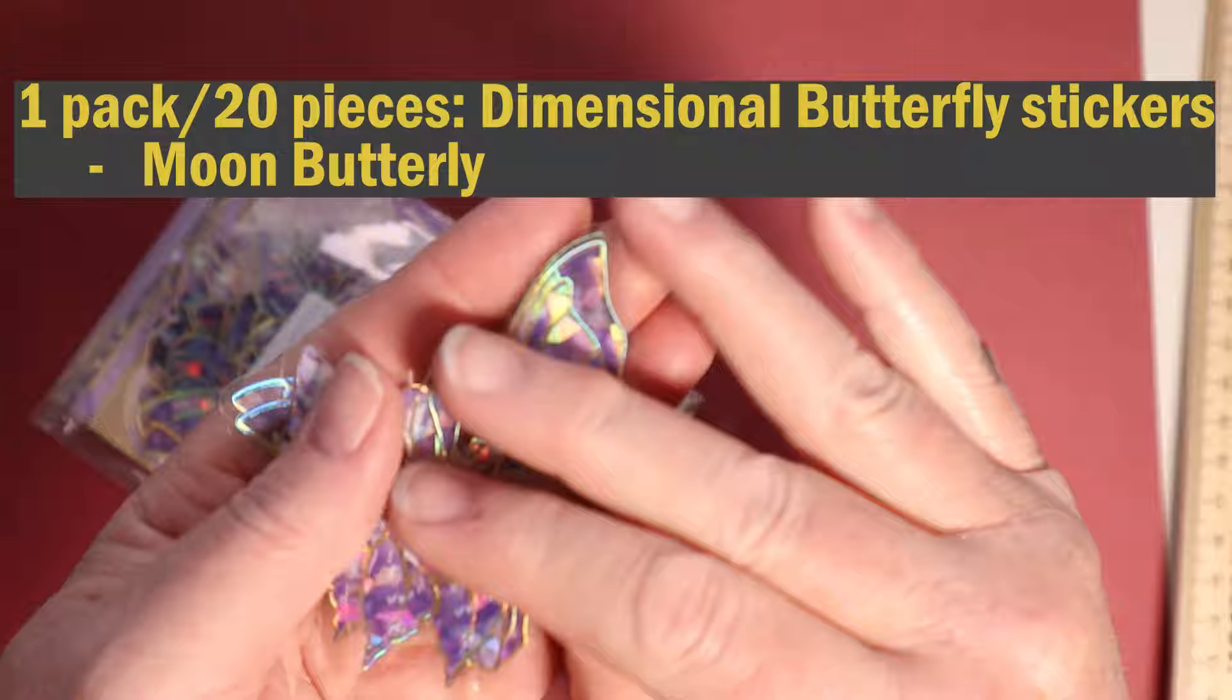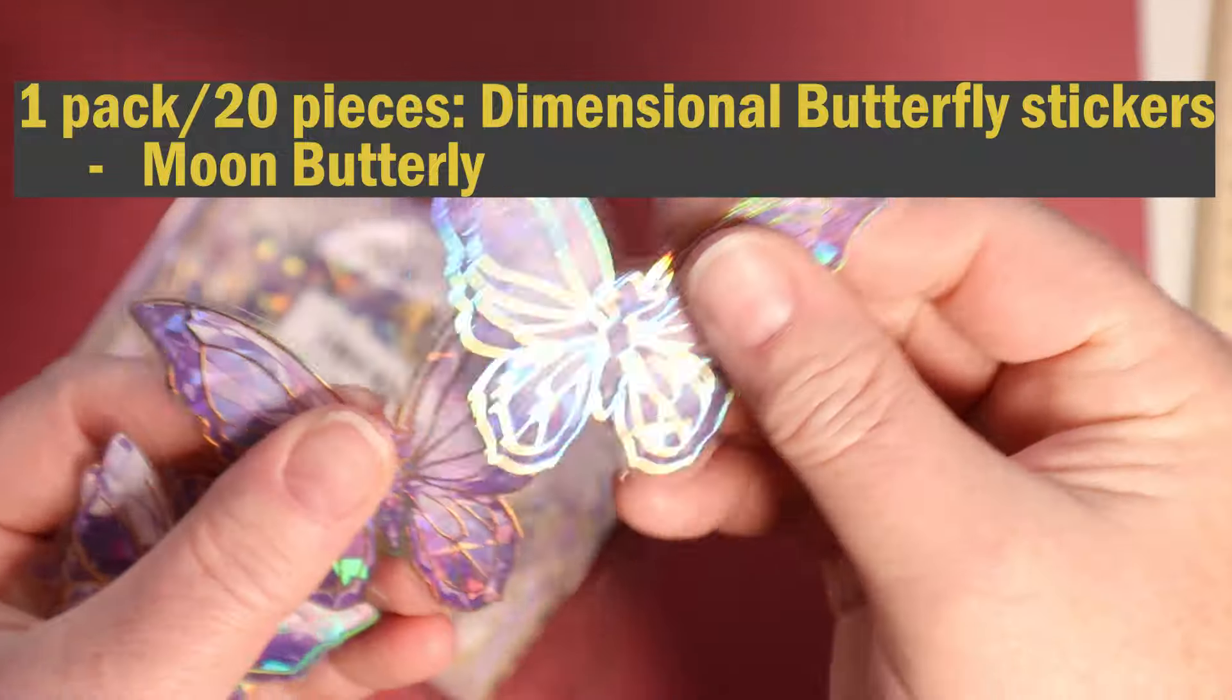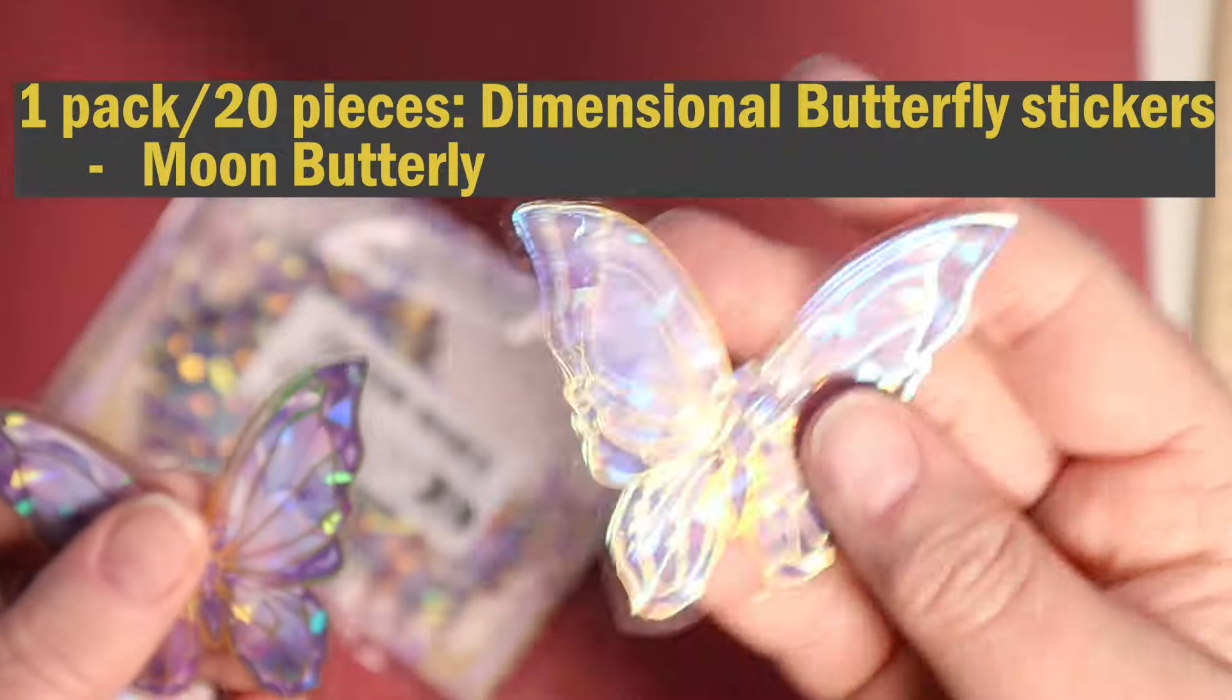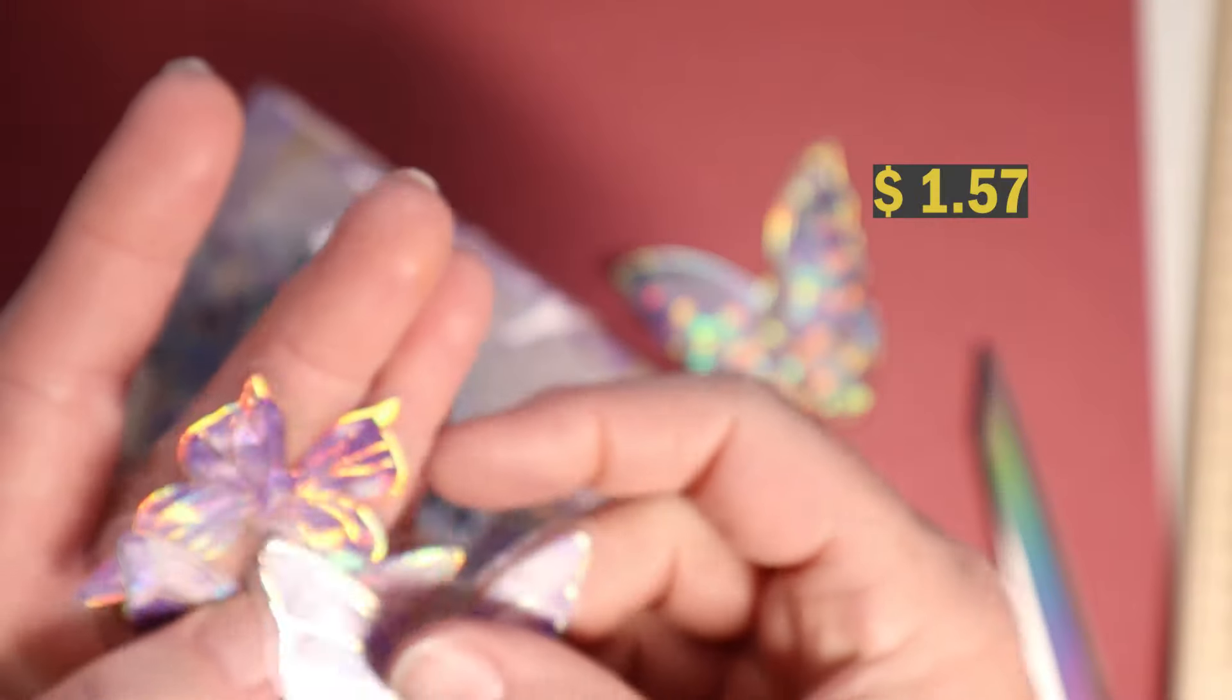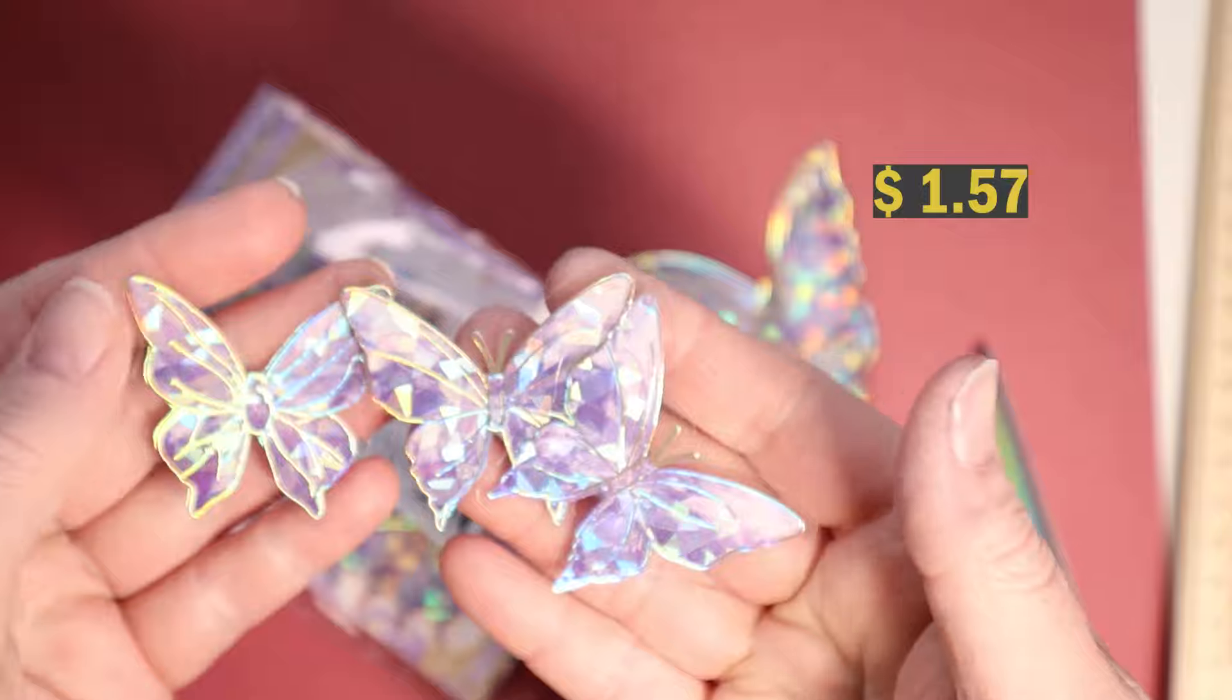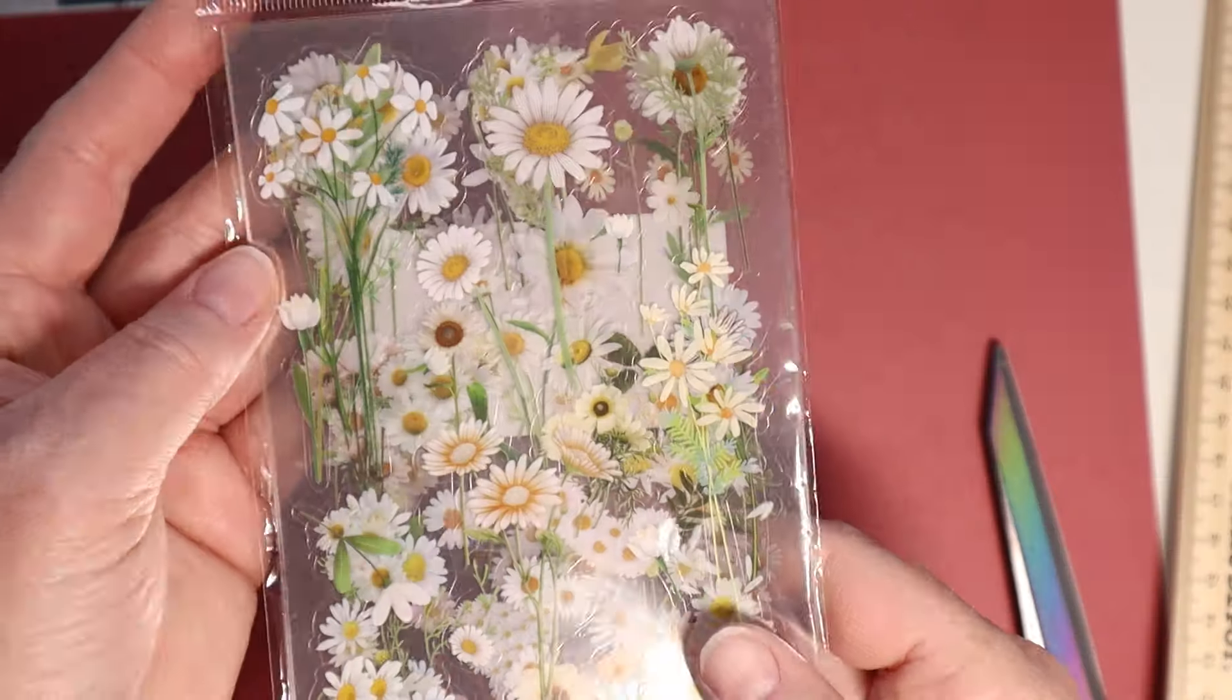All right. Some more gorgeous stickers. I wasn't expecting these to be so pretty. These are called moon butterflies, 20 butterflies in the package. I think there's two of each style here. And these are so shiny and the way they glisten.